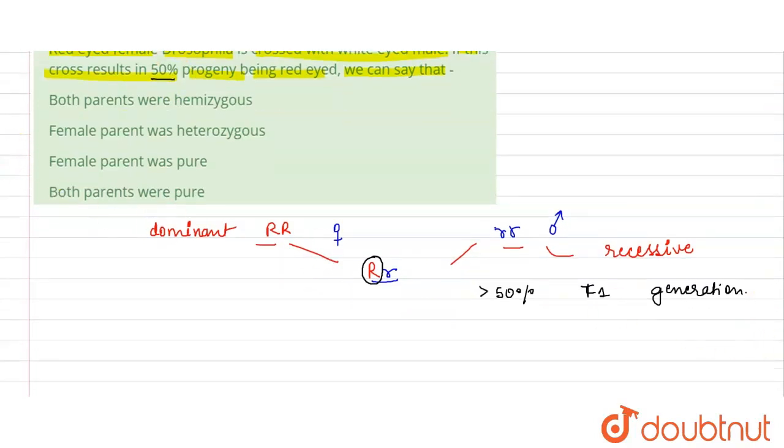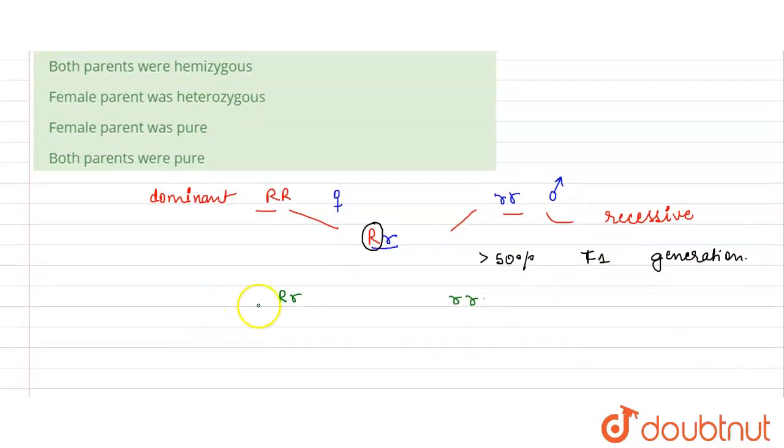So we can say that one parent is capital R small r, and one parent is homozygous in nature. So let's see the cross: what will be the cross? Capital R small r, this will be small r small r. So I am going to get capital R small r, capital R small r, and small r small r, small r small r.